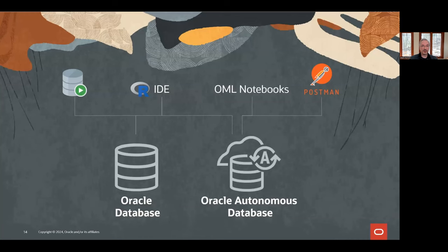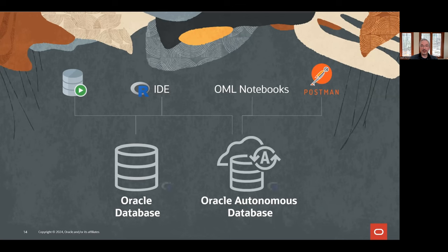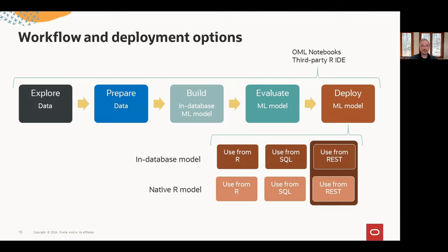We'll highlight the use of OML for R from a few interfaces and how they connect to Oracle Database and Autonomous Database. For R, we have the popular RStudio IDE and OML Notebooks built into Autonomous Database. We can also use SQL Developer to invoke R from SQL. One deployment scenario involves REST endpoints for deployed models and invoking user-defined R functions in database-spawned R engines — which we'll demonstrate using Postman. On the deployment front, we'll highlight working with in-database models as well as native R models, illustrating these from R, SQL, and REST.